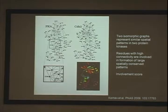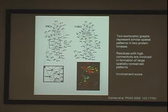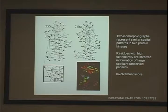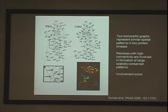As a result, we have a similarity map that shows what residues in protein one are positioned the same way as residues in protein two. This is an example of the comparison of two protein kinases, PKA and CDK2. These similarity maps have an important feature: the method not only gives you the list of similar residues between the two proteins, but it gives you the rank of these residues.